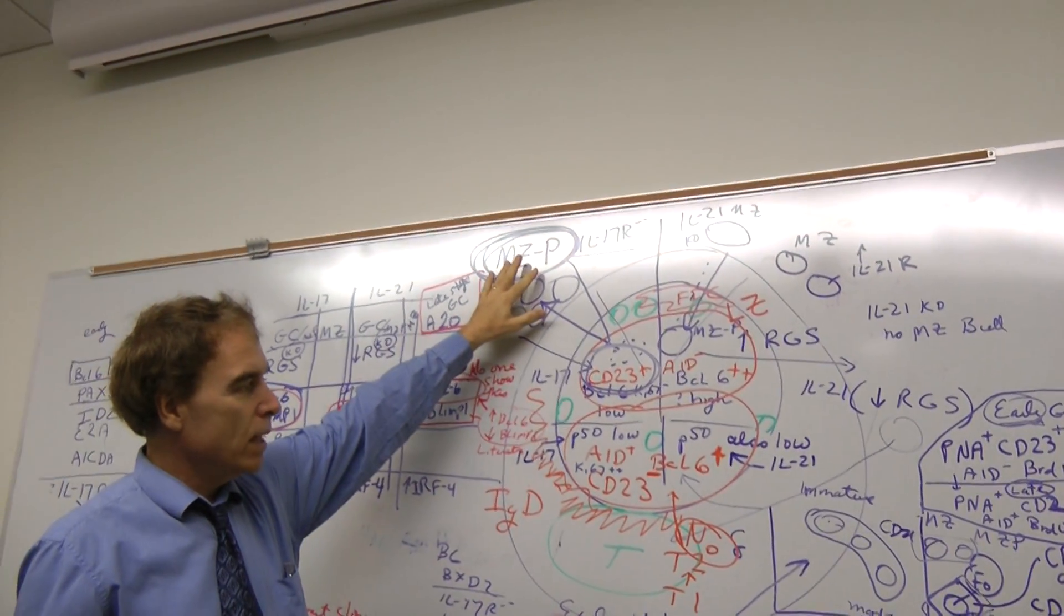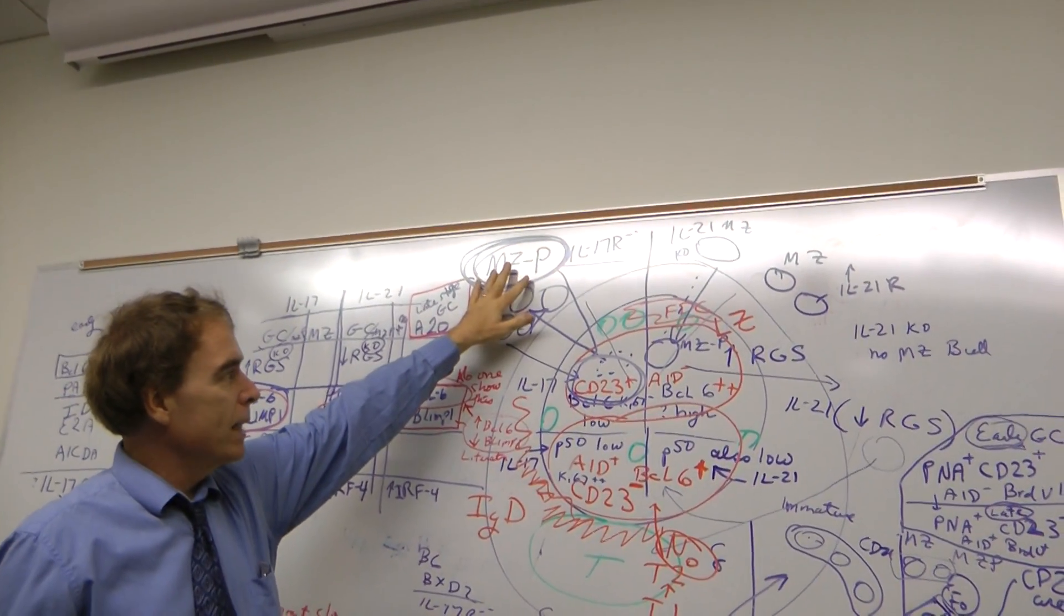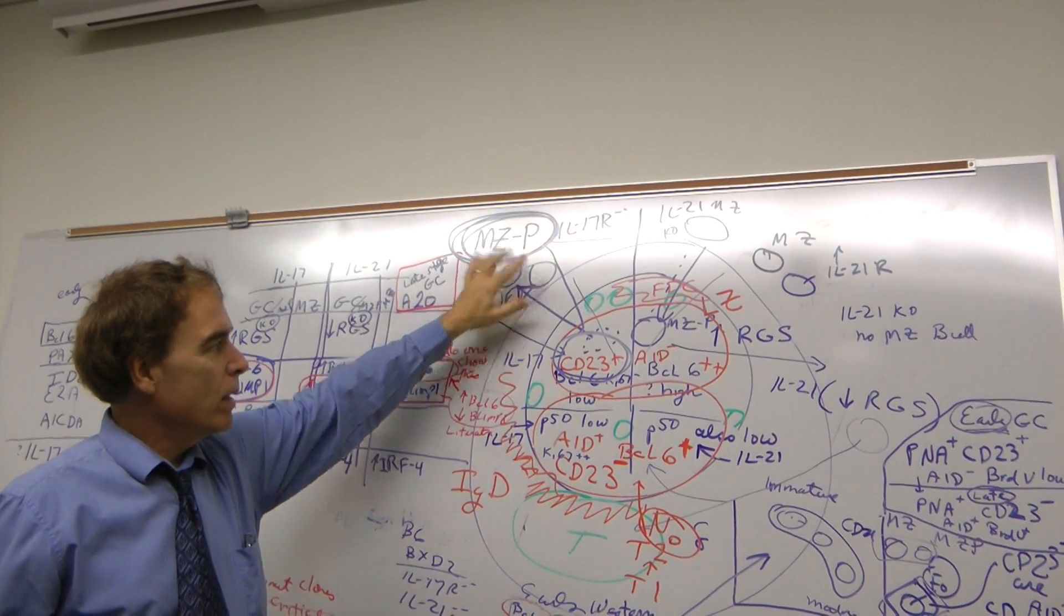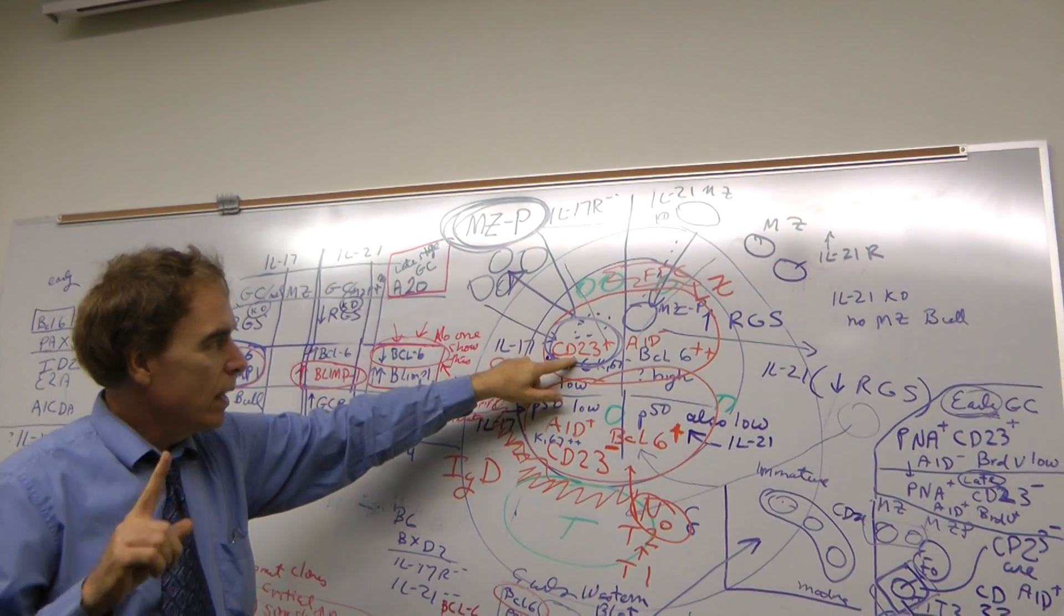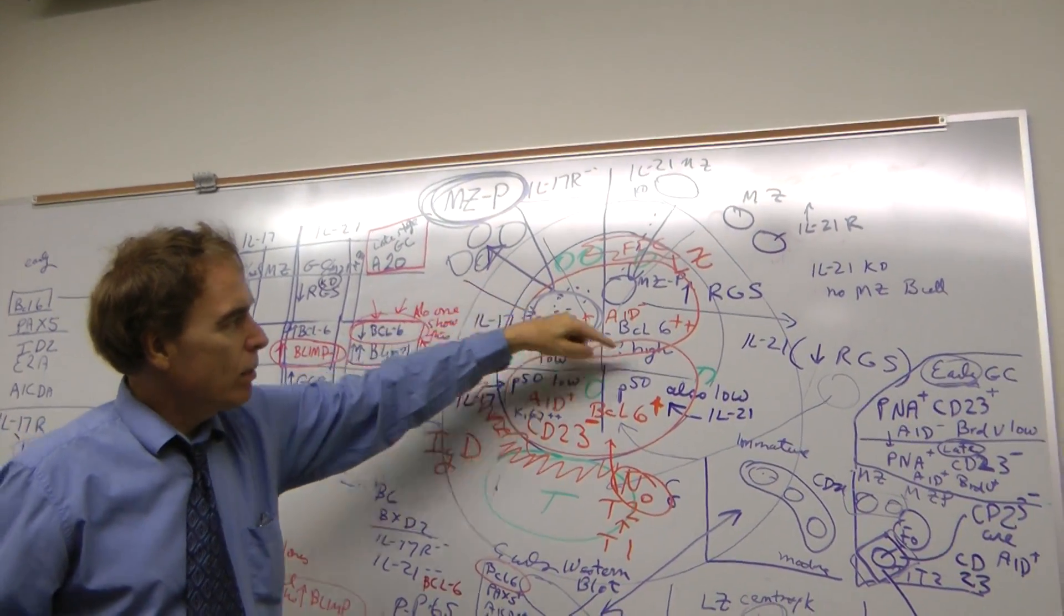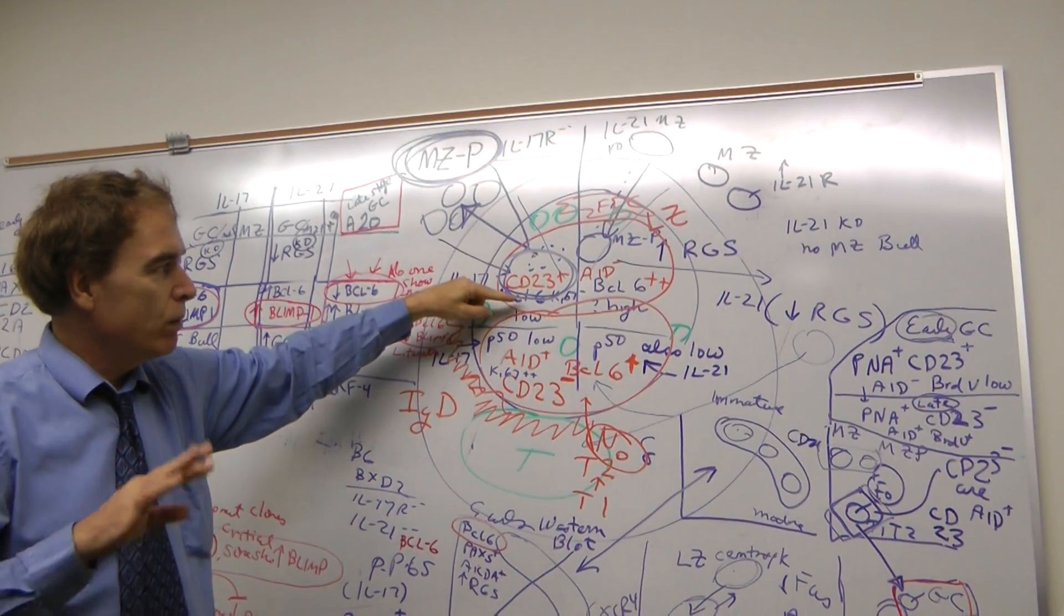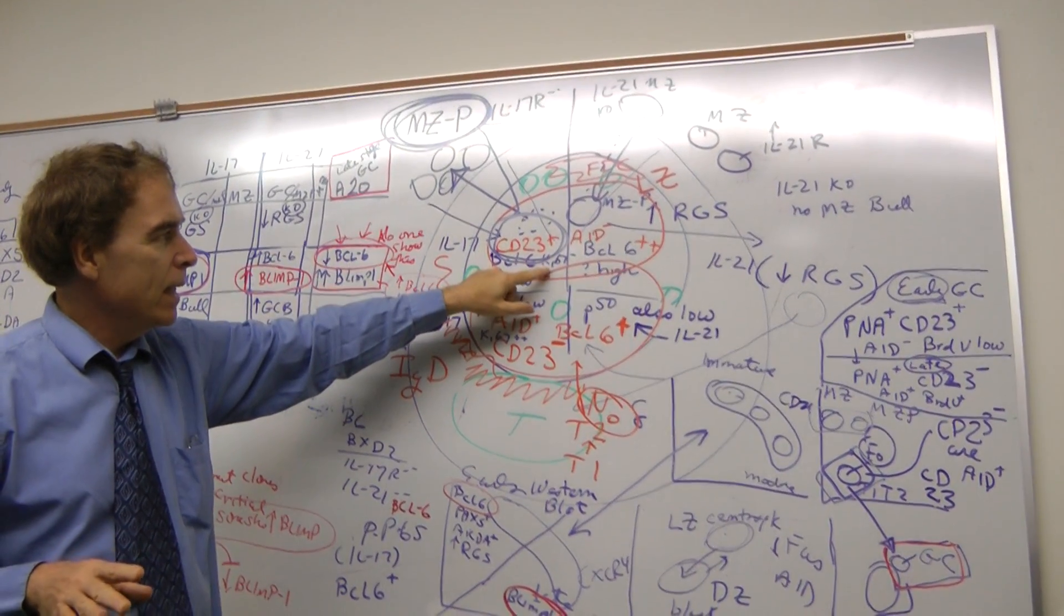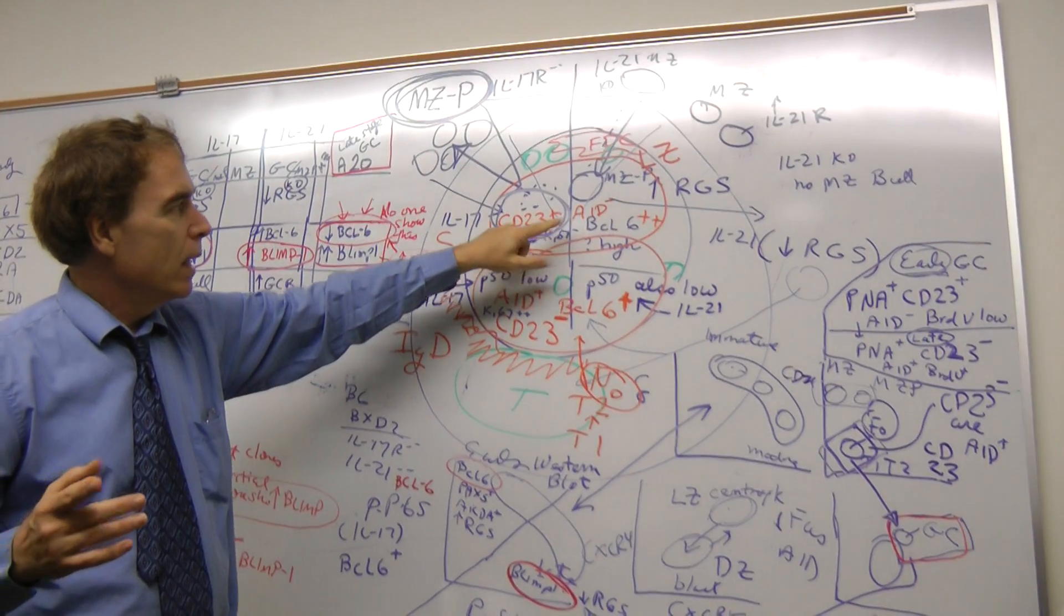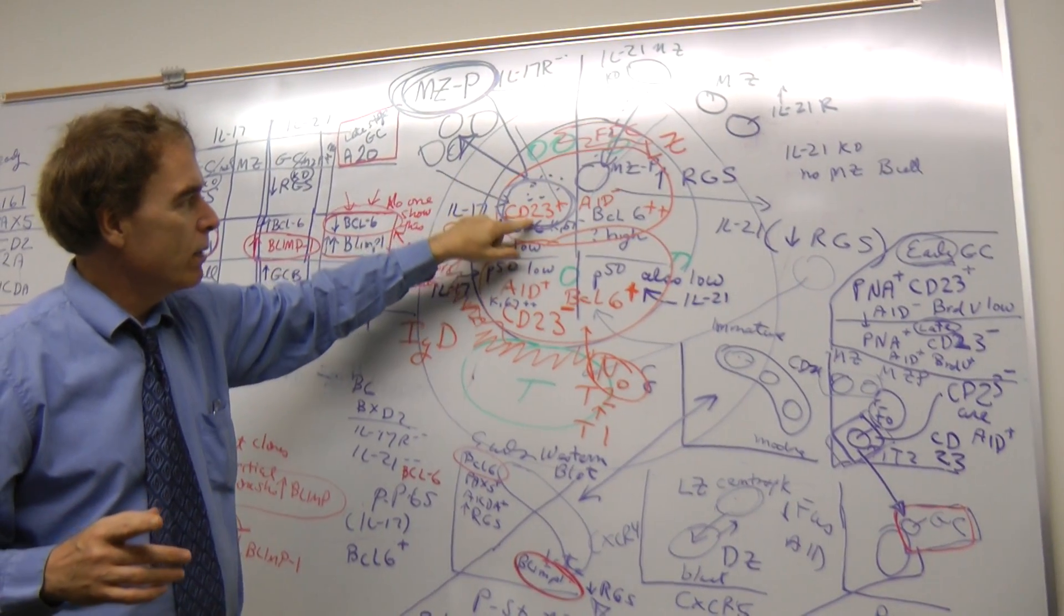The first stage is this confusing MZP, but that's just because they're CD23 positive and they're in the light zone. So CD23 positive B cells in the light zone before they express AID, before they proliferate, they're CD23 positive.